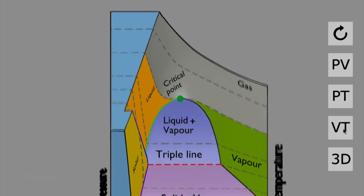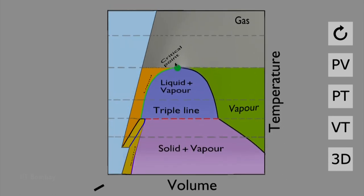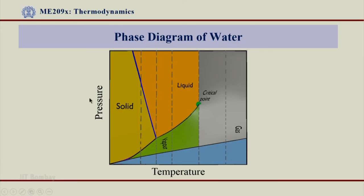The V-T diagram is a better view for this distinction: below the critical point you see vapour, and above the critical point you see gas. We will refer mostly to the pressure-temperature diagram and sometimes the pressure-volume diagram. The animation was made for understanding the phase transition, but we will mostly refer to the P-T and P-V diagrams. Thank you very much.